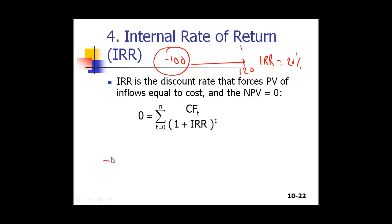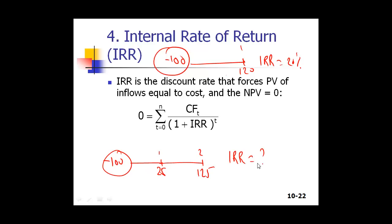Let's say you invest 100, and then after one year you get 25, and after two years you get 125. What's the IRR — your annualized return? Think about it. If you invest 100, get 25 after one year and 125 after two years, what is your return?